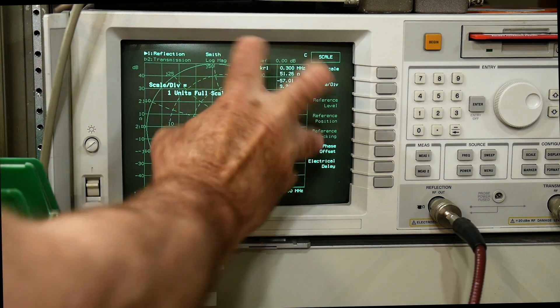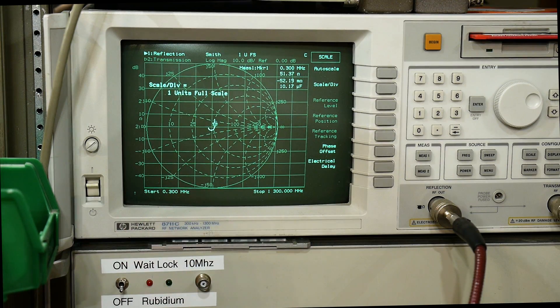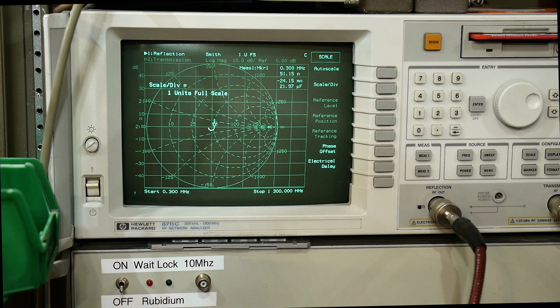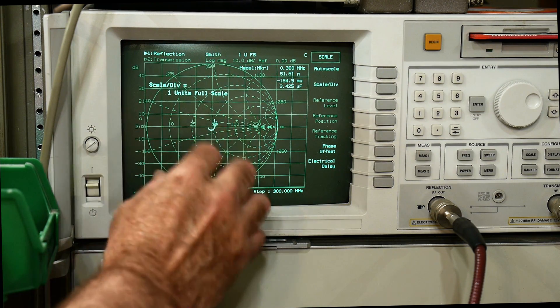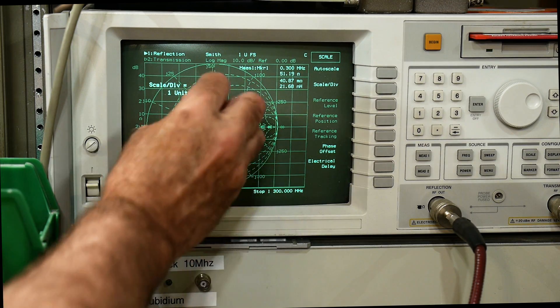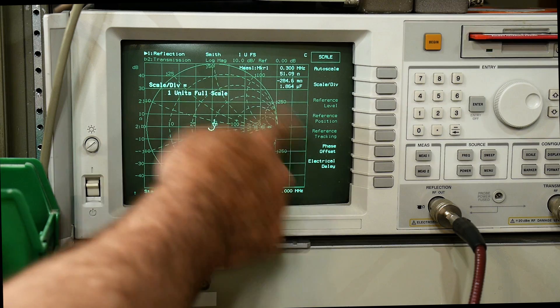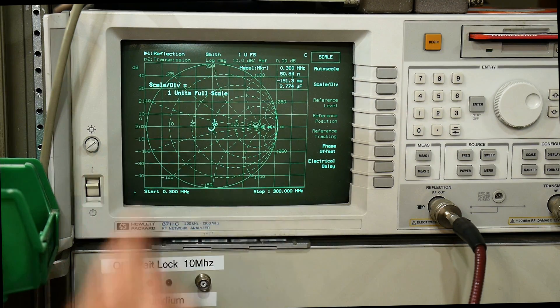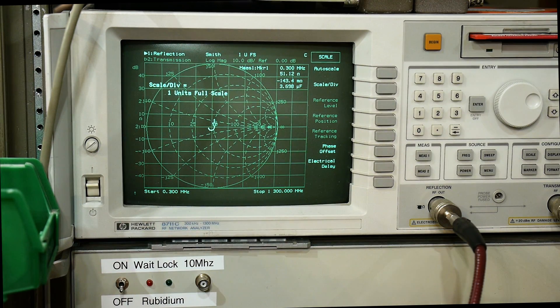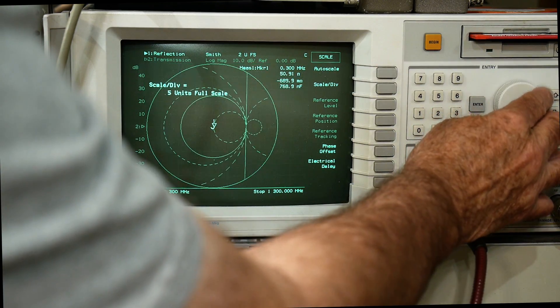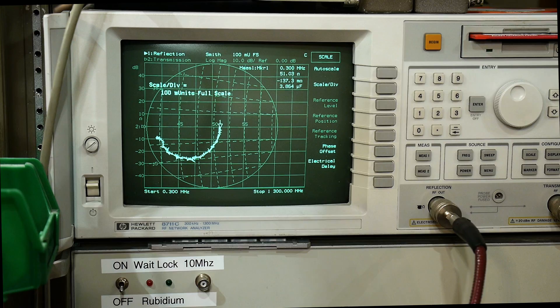So electrical length on a Smith chart just rotates things. Wherever you are, it's just going to rotate it. The longer transmission line you have, you're just going to change the phase, you're not going to change the SWR. SWR are concentric circles on this chart, and as long as you're traveling clockwise or counterclockwise, you're staying exactly the same return loss, exactly the same SWR. So we can zoom in on this and take a look at our little whoop-dee-doo there.